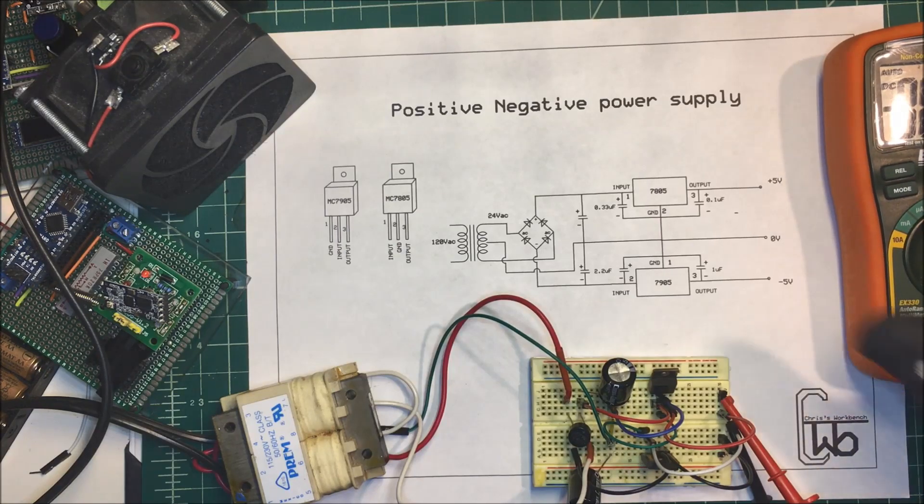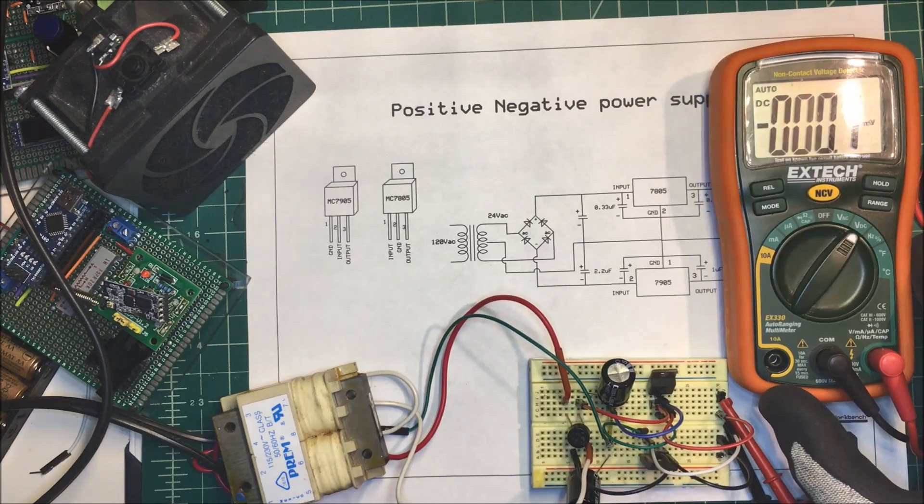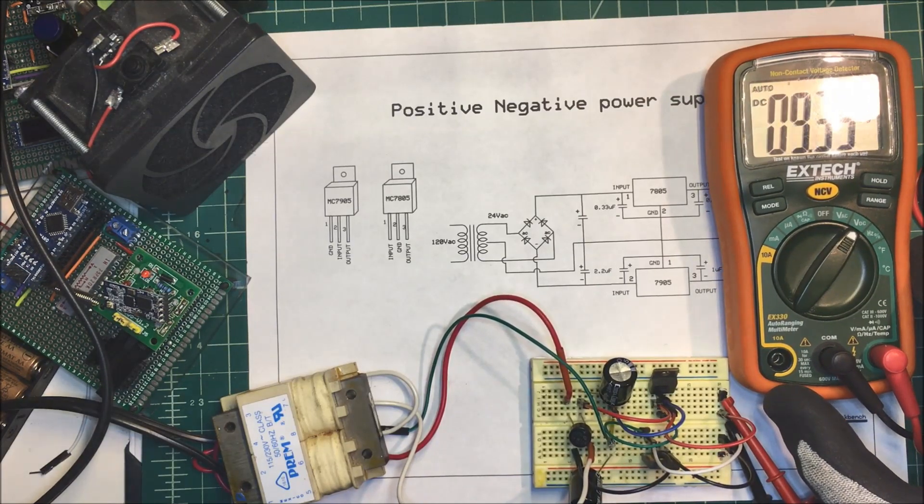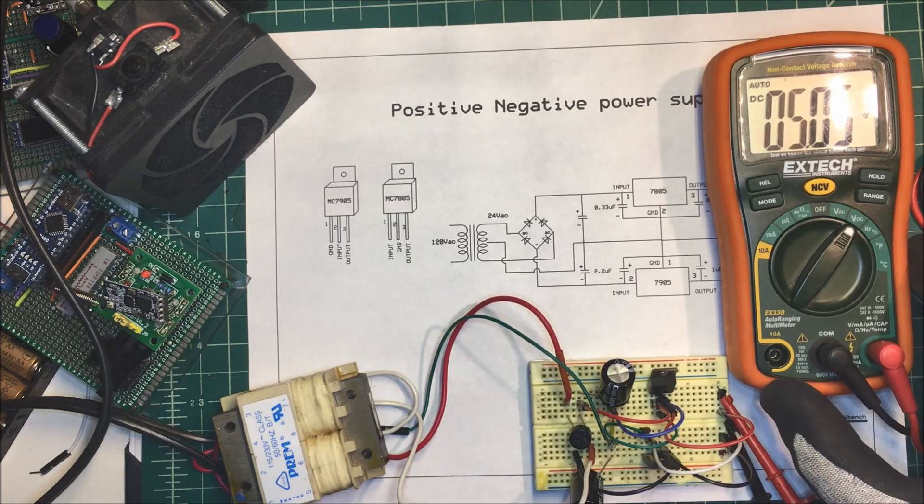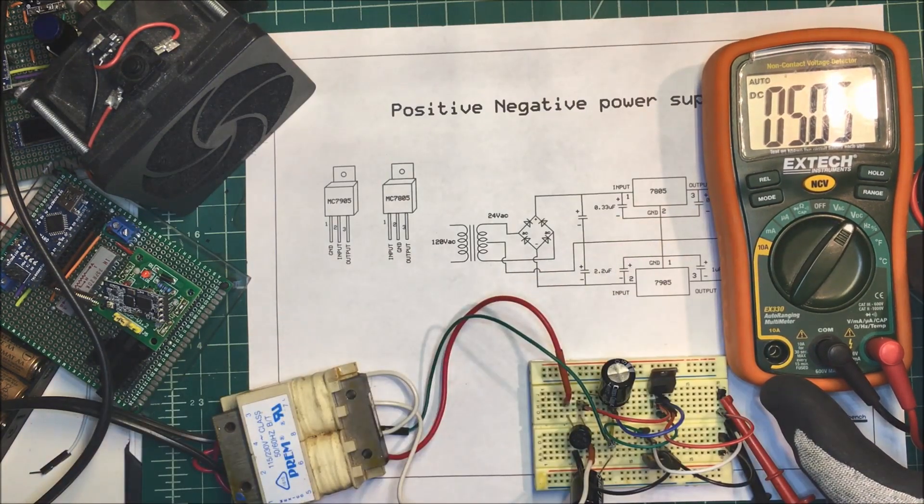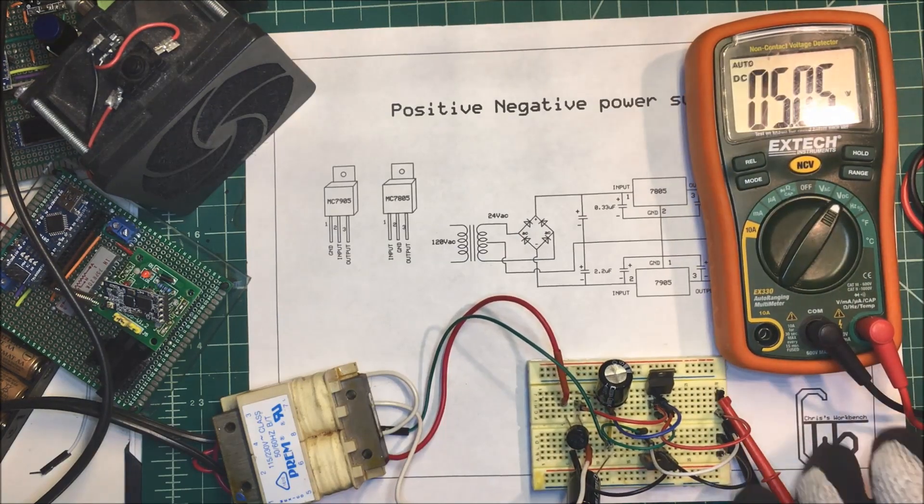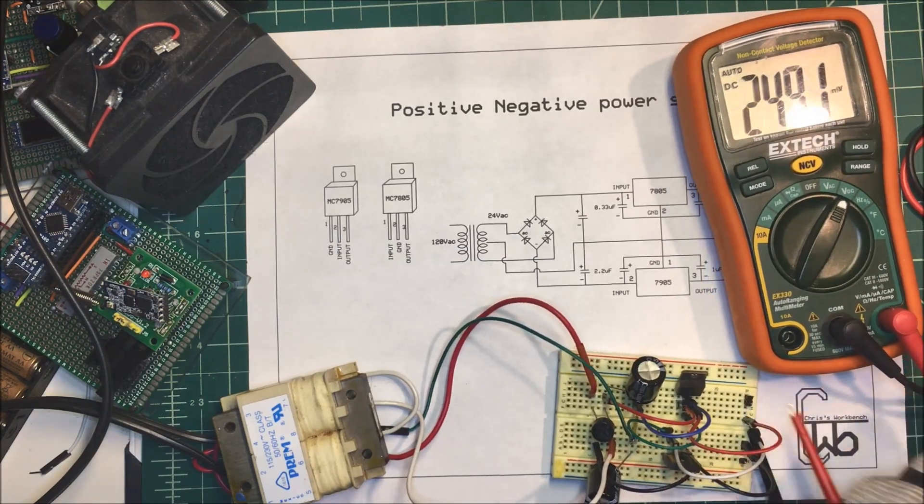I got DC voltage here. I'm going to turn the unit on, and I've got it hooked up to the positive side right now. I've got 5.05 volts on there. Now I'm going to take it to the negative side.